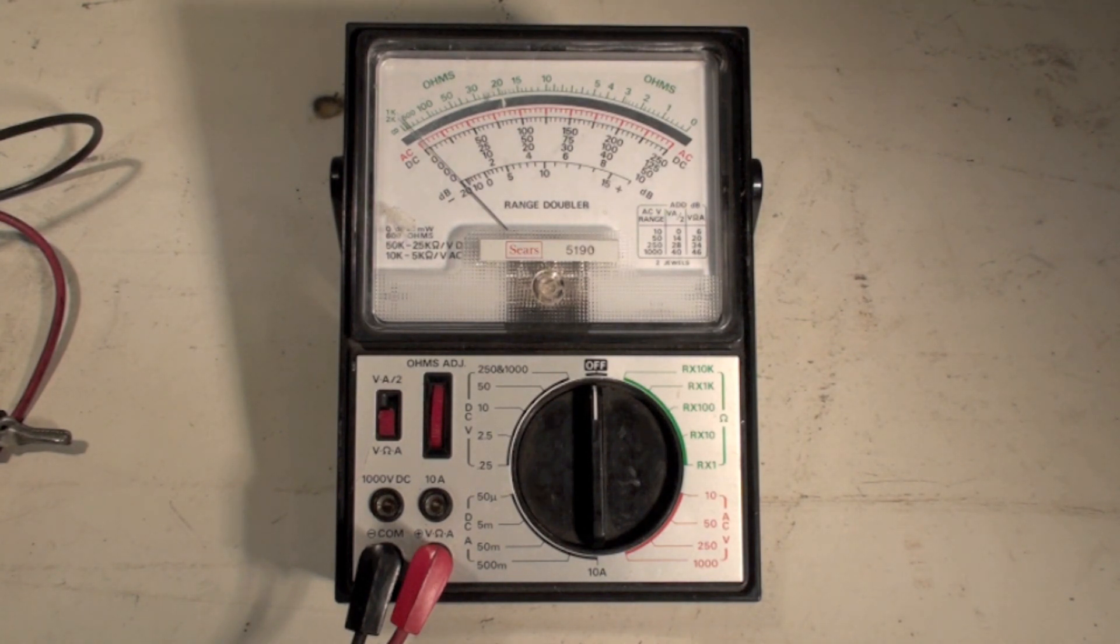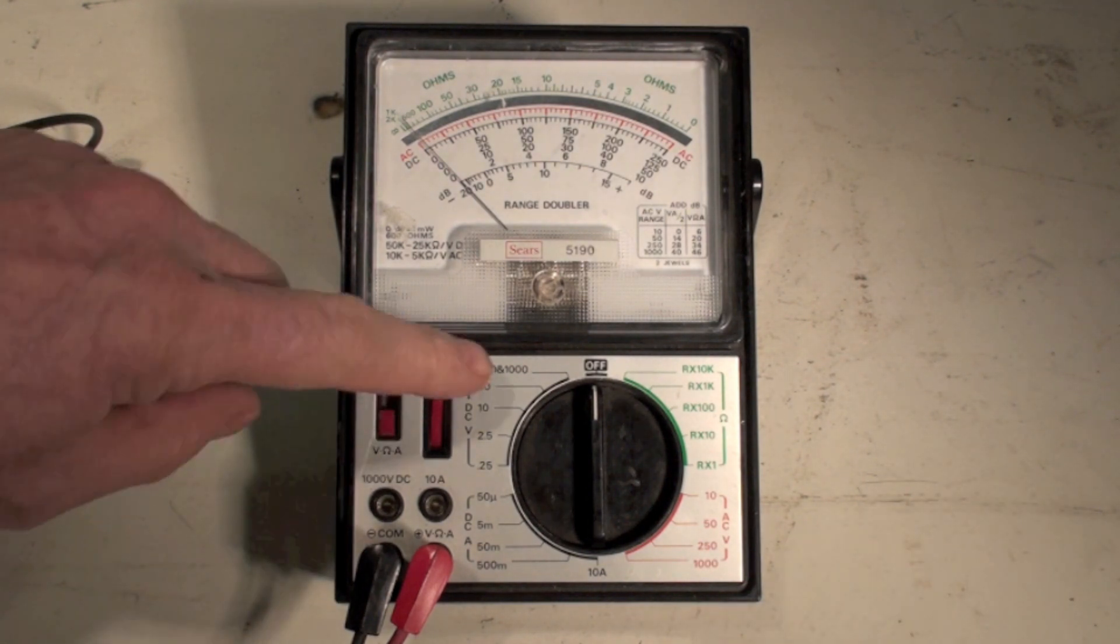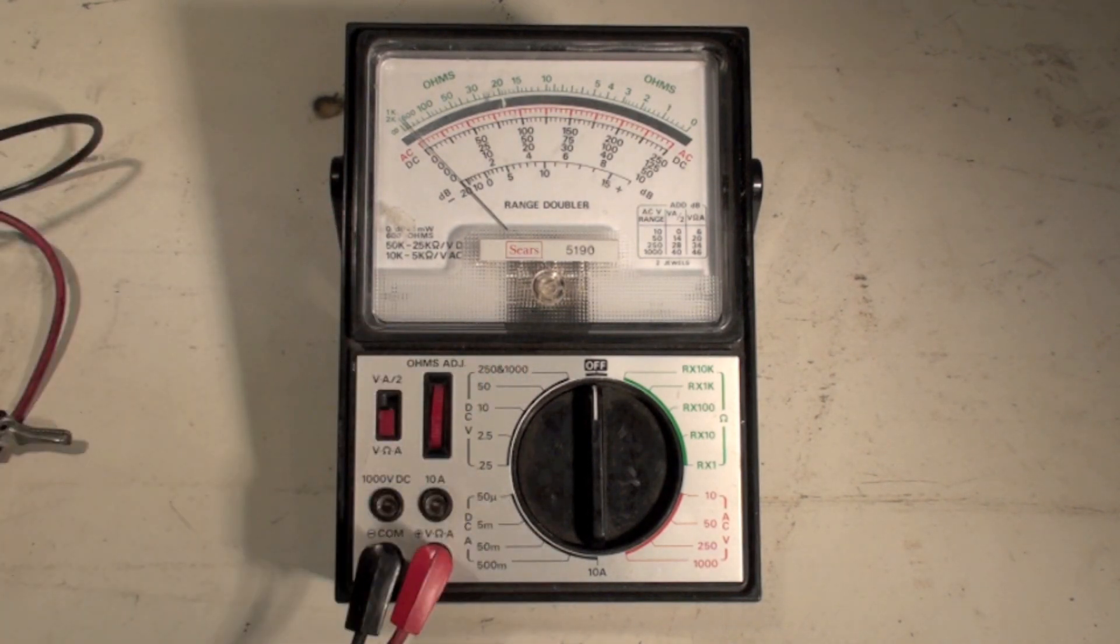All that means is it'll do voltage, which is pressure. It will do ohms, which is resistance, and it has a number of ranges. Now all these used to be set up this way. They have many little places here on the dial that you can set it for.